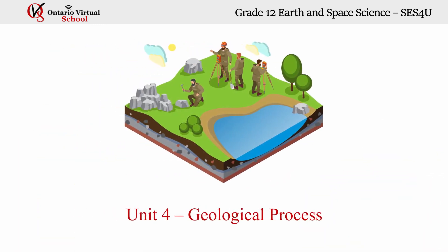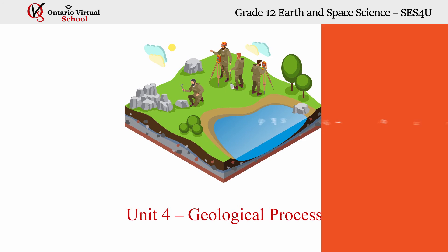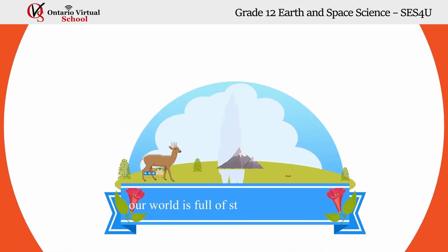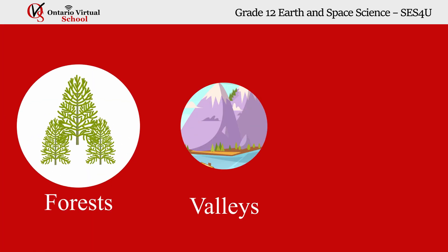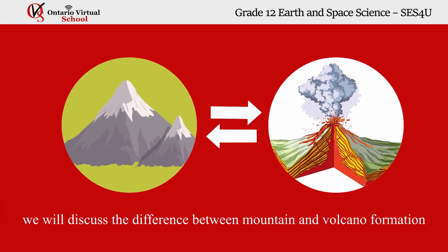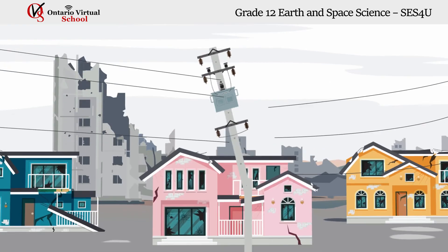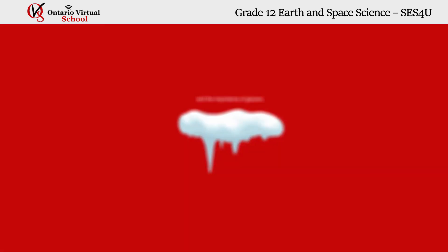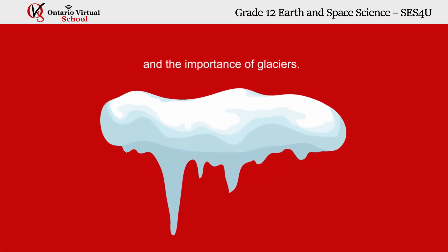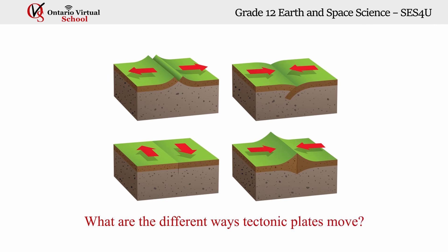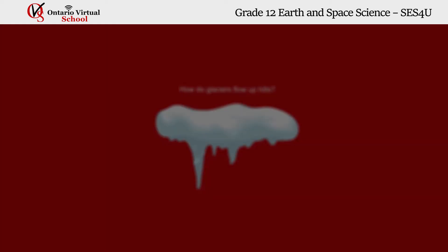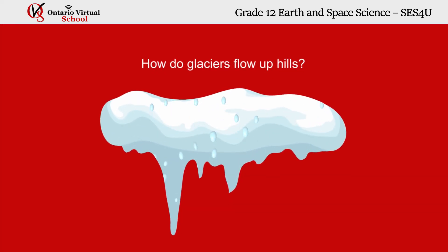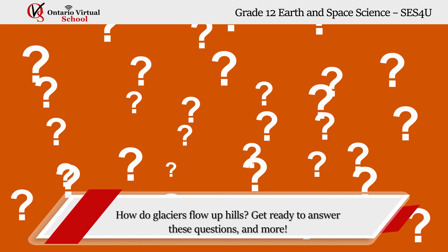Unit 4: Geological Processes. Thanks to Earth's geological processes, our world is full of stunning national parks, forests, valleys, and mountains. In this unit, we will discuss the difference between mountain and volcano formation, how and where earthquakes happen, and the importance of glaciers. What are the different ways tectonic plates move? What happens when they collide? How do glaciers flow uphill? Get ready to answer these questions and more.